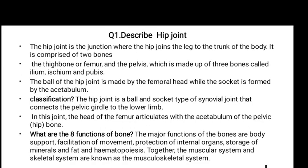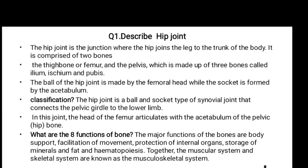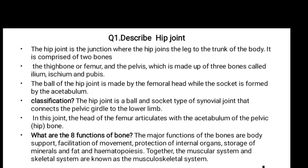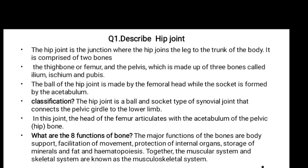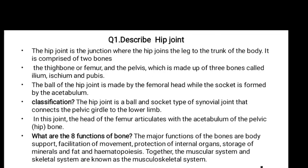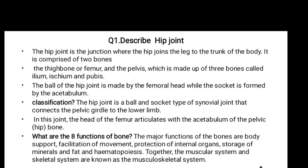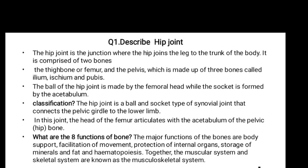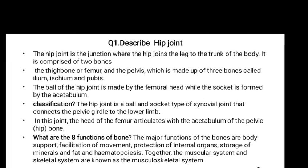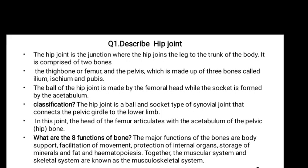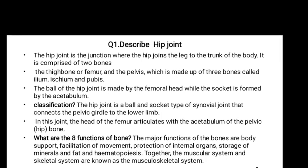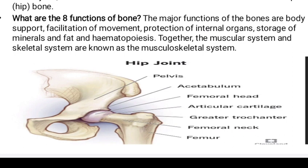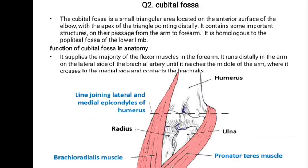Question: what are the eight functions of bone? The major functions of bones are body support, facilitation of movement, protection of internal organs, storage of minerals and fat, and hematopoiesis. Together, the muscular system and skeletal system are also known as the musculoskeletal system. A diagram is provided — you have to draw and label it properly.